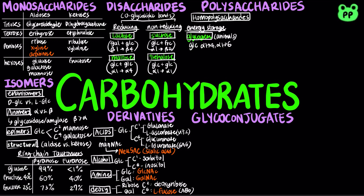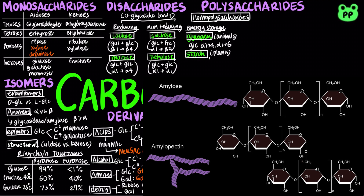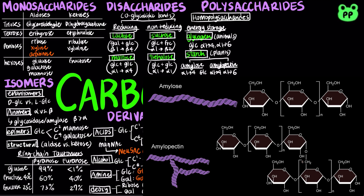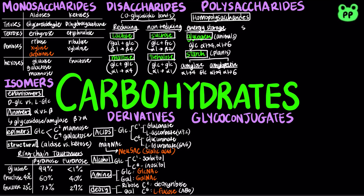The energy-storing polysaccharide in plants is known as starch. It contains two types of glucose polymers. Amylose consists of long unbranched chains of glucose residues connected by alpha-1,4 linkages, whereas amylopectin contains glucose residues linked by alpha-1,4 as well as alpha-1,6 linkages, branching every 24-30 residues, which is less compact than glycogen.